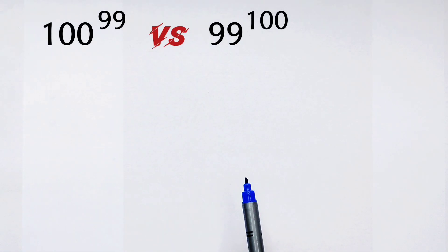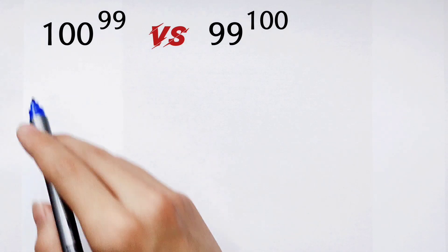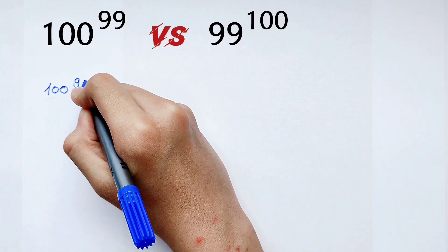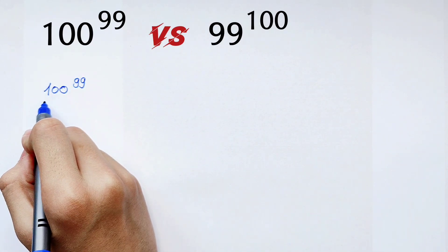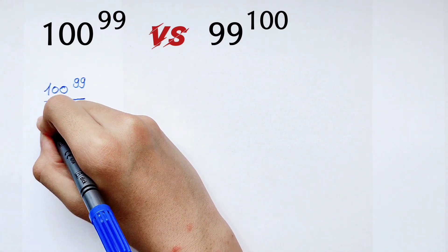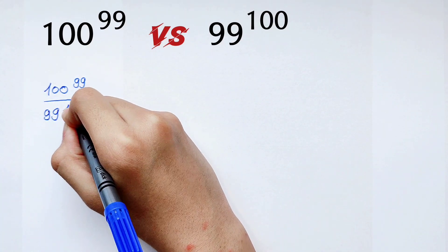Both have exponents, so now I would like to do division. I would like to let 100^99 divide by 99^100.